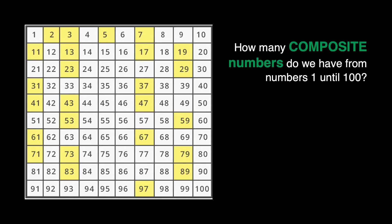I have a question. How many composite numbers do we have from numbers 1 until 100? Can we consider 1 as a composite number? Why is it not a composite number? So these are some questions I want you to answer in the comment section.